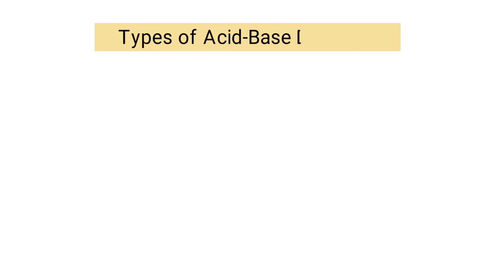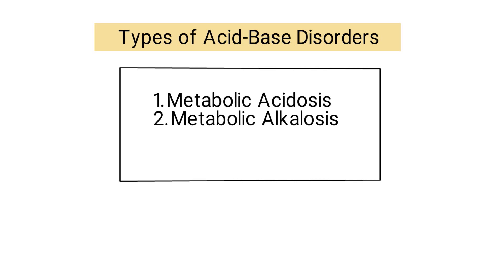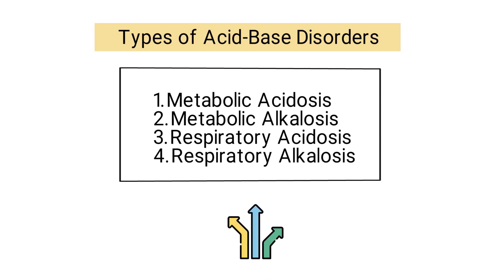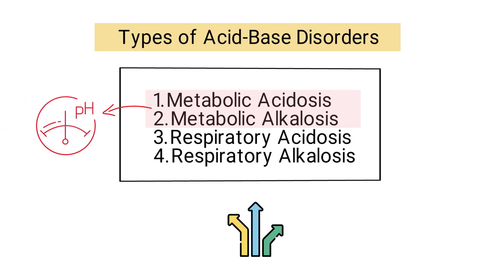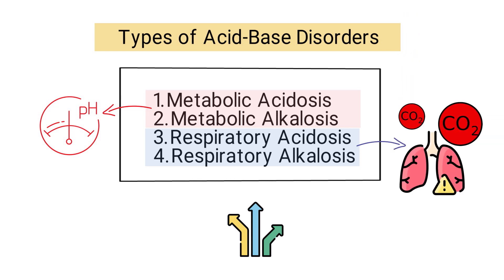If the measured PaCO2 is within the range, it confirms respiratory compensation and pure metabolic acidosis. There are four different types of acid-base disorders: metabolic acidosis, metabolic alkalosis, respiratory acidosis, and respiratory alkalosis. Metabolic disorders are caused by an imbalance in the body's ability to maintain proper pH levels, while respiratory disorders occur when the lungs remove too much or too little CO2 due to problems with ventilation.